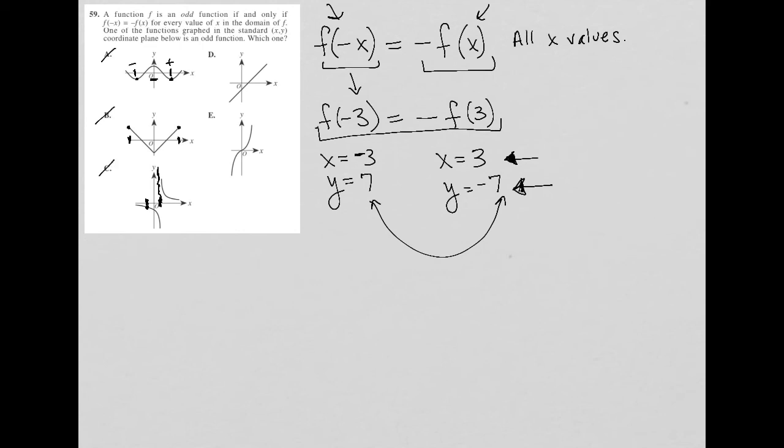Choice D, very similar scenario. I would like to use this point here in comparison to this negative x value there. As you can see, the positive x value gives you a y value of zero. But the negative x value gives you some negative y value way down here. So again, they're not even the same quantity, much less different signs. So D is gone.